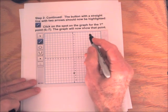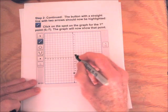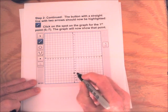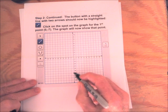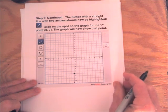And we can plot the first point. That's 0, negative 7. Zero left or right, down 7. And just click on that spot on the graph and you should see a dot there for that point.